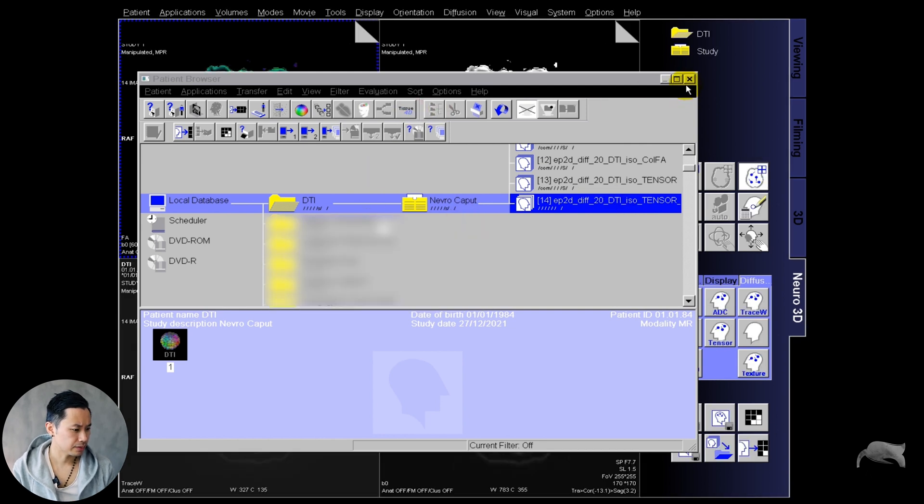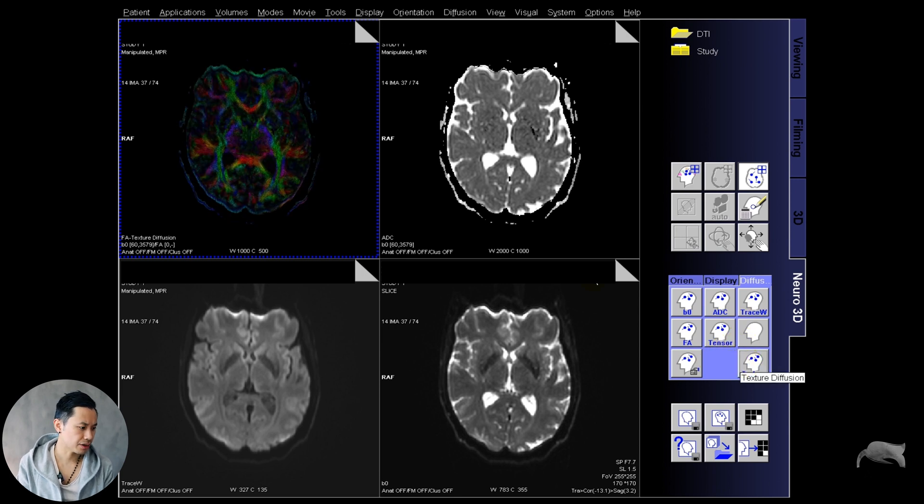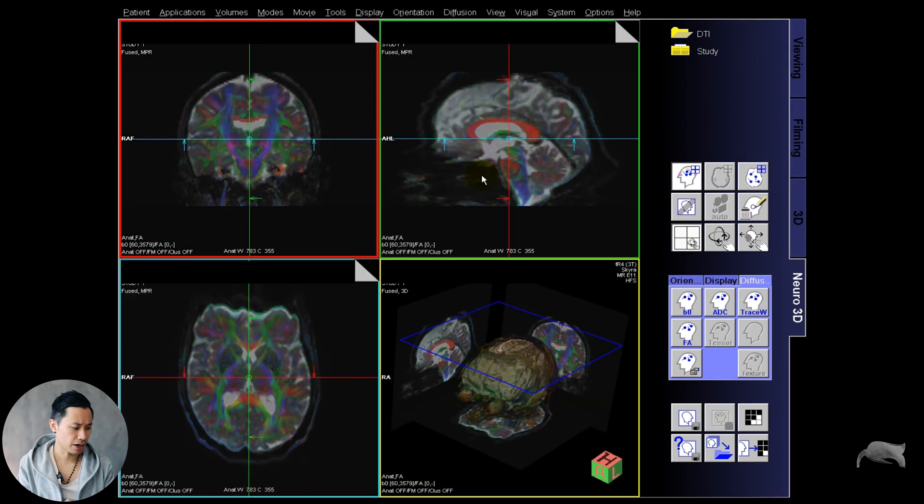Let's check it out. You have the FA map, ADC, the trace, everything. You have different options you can tick on or off for the texture. Just test out what you need and don't need. We go into the fusion mode, that's where we can do the DTI tracking.